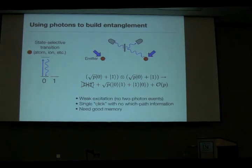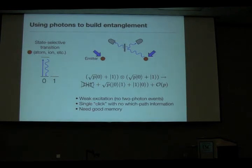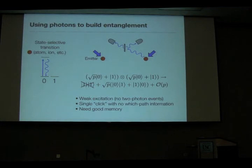Some requirements here: I use weak excitation and want to reduce all two-photon events. I'm relying on the single click which destroys the which-path information, and for that these photons really must be indistinguishable. In practice that means I need interferometrically stable configurations, which is quite a challenge experimentally. Creating an interferometer of 10 kilometers where spacing has to be stabilized to within 10 nanometers is going to be a challenge for any experimentalist.